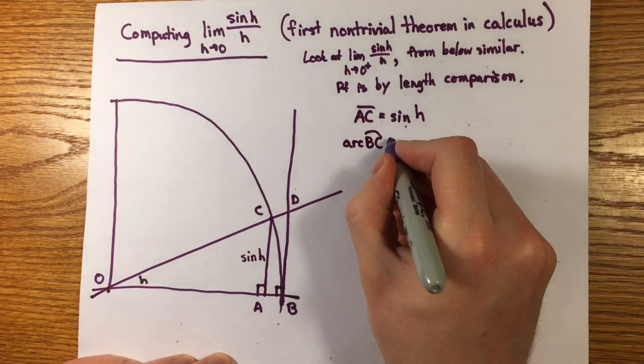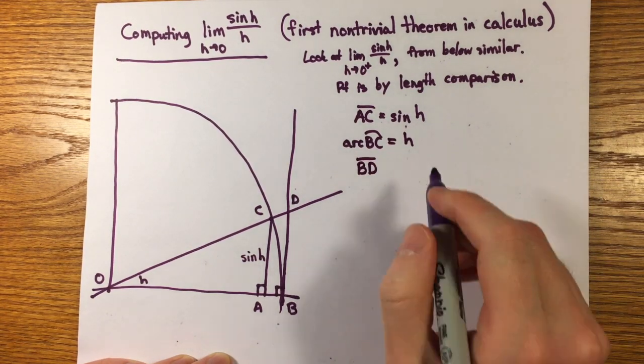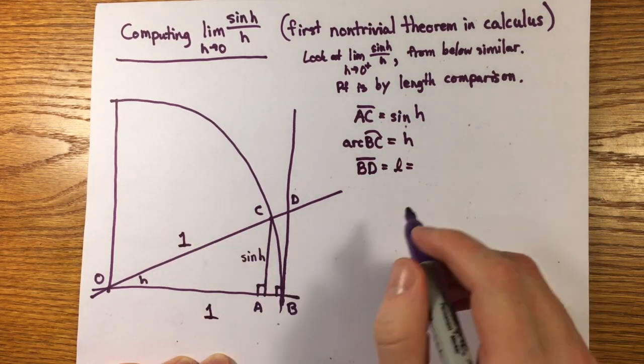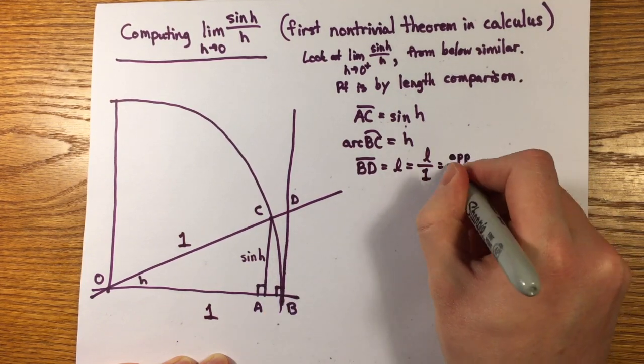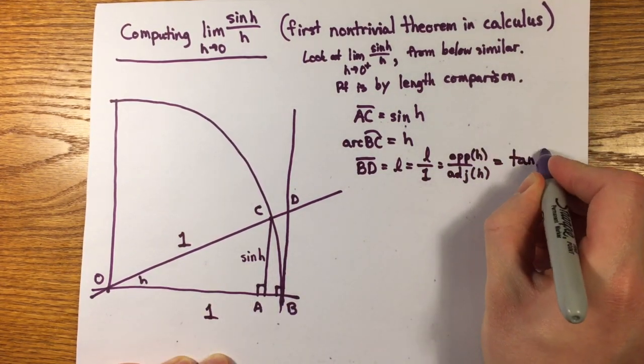We can compare that to the length of the arc BC, which is h by definition. The length of BD is tangent h, since it's the opposite side of a right triangle with adjacent side length 1.